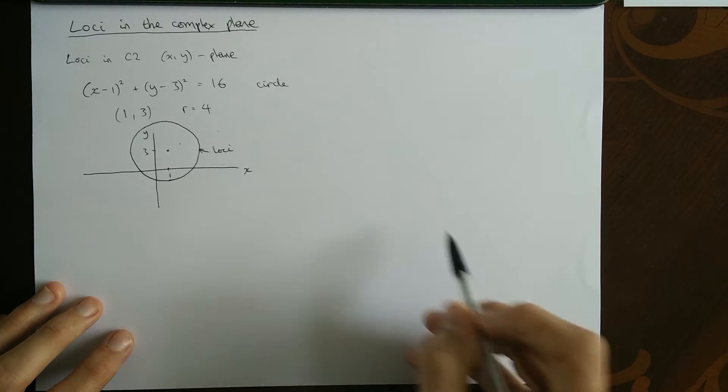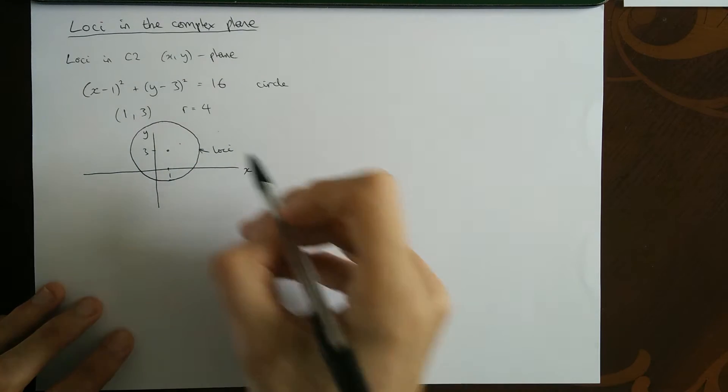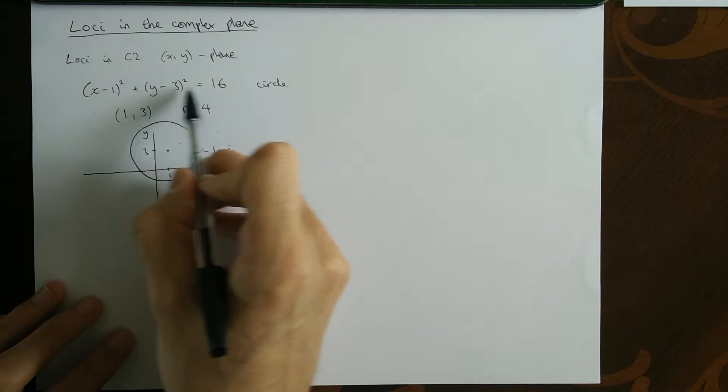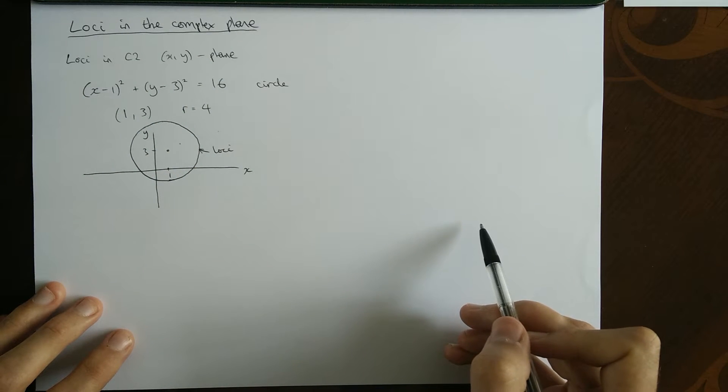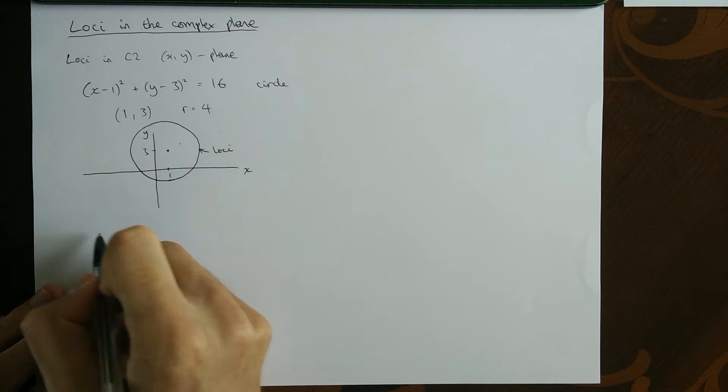Similarly, if you put that point in, you'll find those x and y coordinates plugged in there gives you less than 16. Again, the points on this equation, the only ones, the only x and y values would actually have to be equal to 16. And that's what a loci is, points that obey a rule.